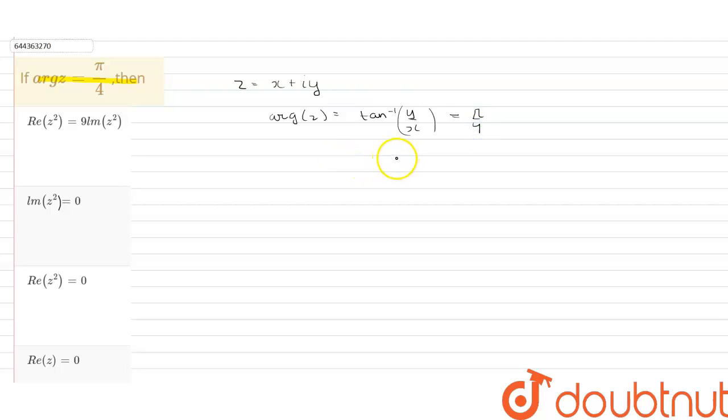Taking tan on both sides, we get y/x as tan and tan inverse will cancel, equals 1. This implies y equals x.